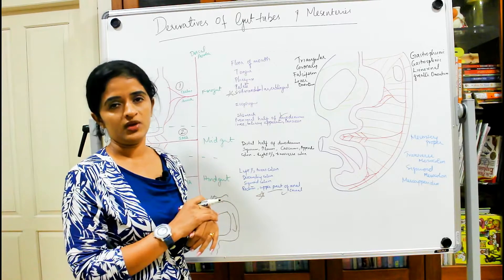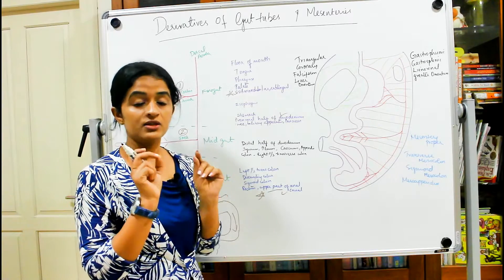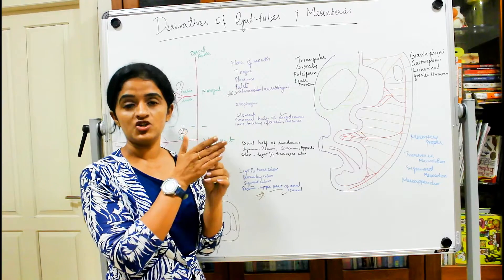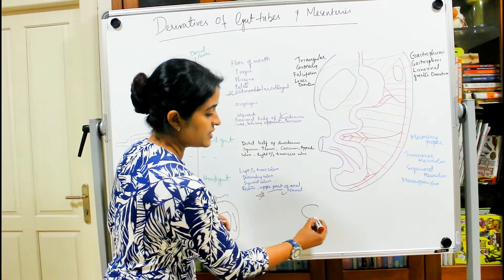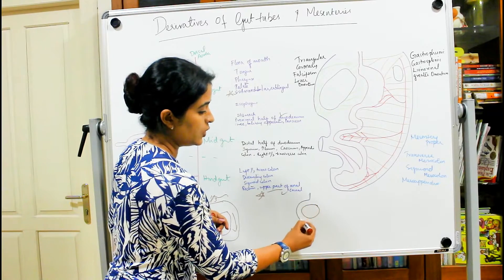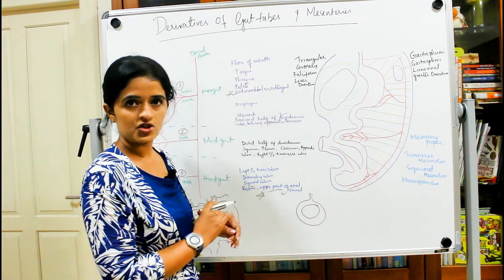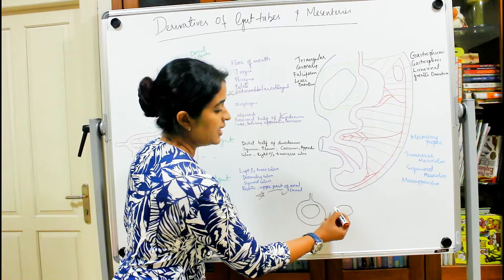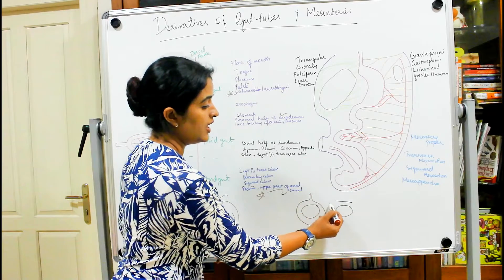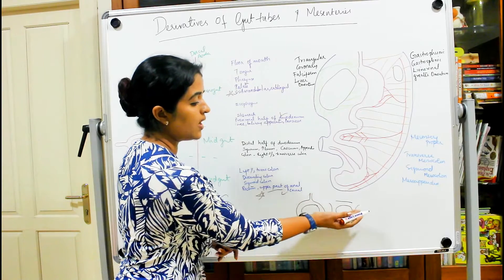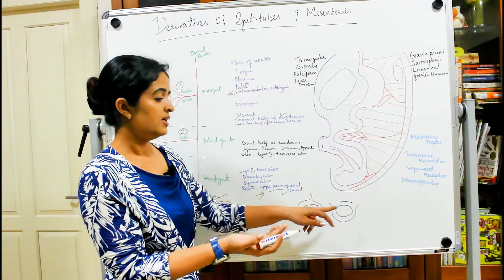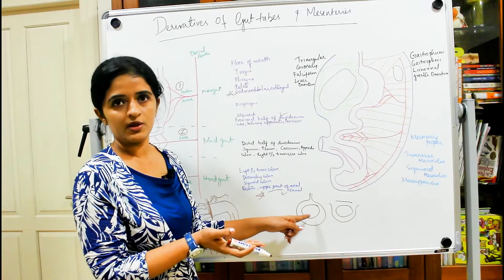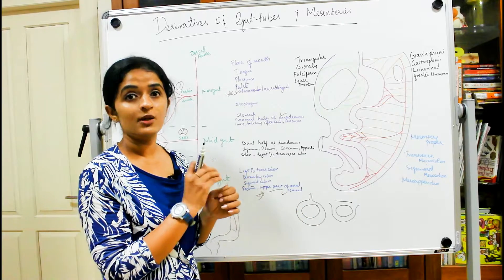Retroperitoneal means only part of a structure has a relationship with the peritoneum. If peritoneal folds entirely cover a structure, it is intraperitoneal. If a structure lies closer to the posterior abdominal wall with peritoneum covering only one aspect, it is called retroperitoneal. Intraperitoneal does not mean the organ is inside the peritoneal cavity — it means all parts of the organ have a relation with the peritoneum.